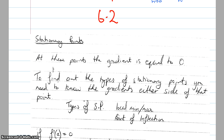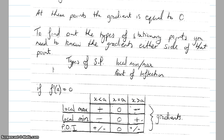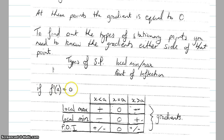Examining the gradient either side will tell us whether it's a local minimum, a local maximum, or a point of inflection. If we look at a particular point, let's call it point A, and we know that the gradient when x equals A is equal to zero, then we know it's a stationary point when x equals A.